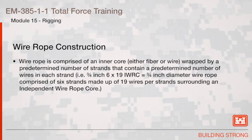Wire Rope Construction. Wire rope is comprised of an inner core, either fiber or wire, wrapped by a predetermined number of strands that contain a predetermined number of wires in each strand. For example, 3/4 inch 6x19 IWRC is a 3/4 inch diameter wire rope comprised of 6 strands made up of 19 wires per strand surrounding an independent wire rope core.